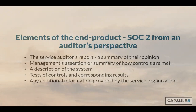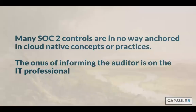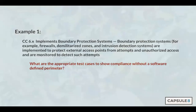The tests and controls section could literally be volumes of data depending on the scope of the audit. More trust service criteria included means more use cases. If you have multiple CSPs or multiple third parties, that expands further. Lastly, any additional information you'd like to provide in the audit, potentially noting third-party attestations you have or supporting documentation for other organizations you work with, can be included.